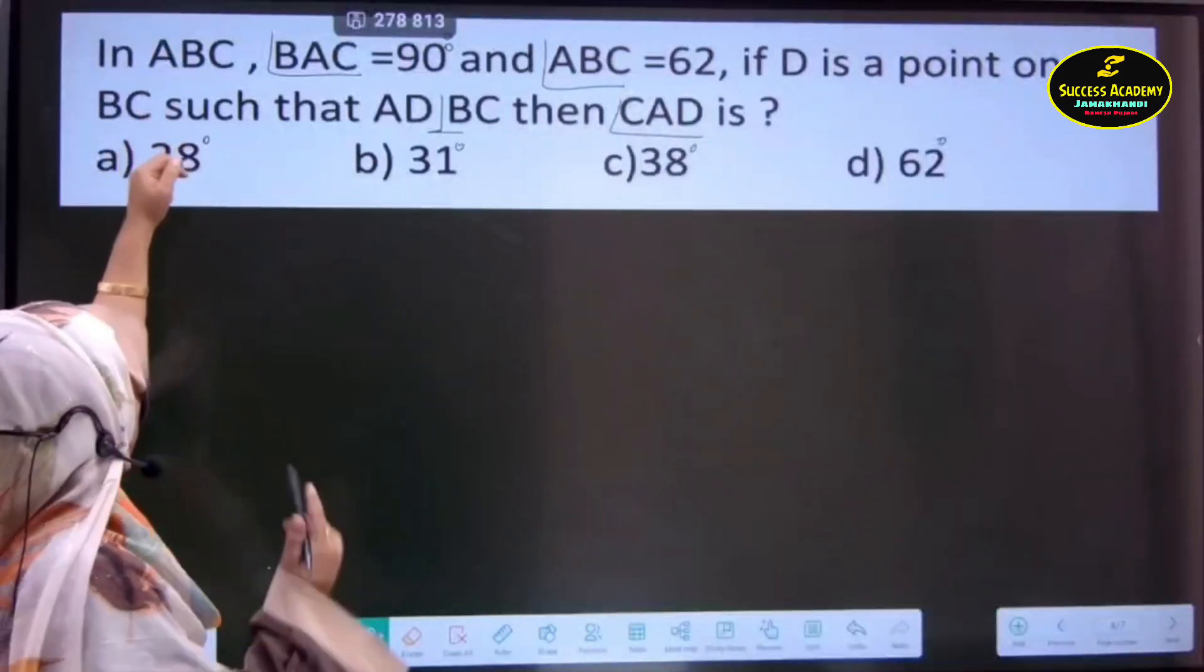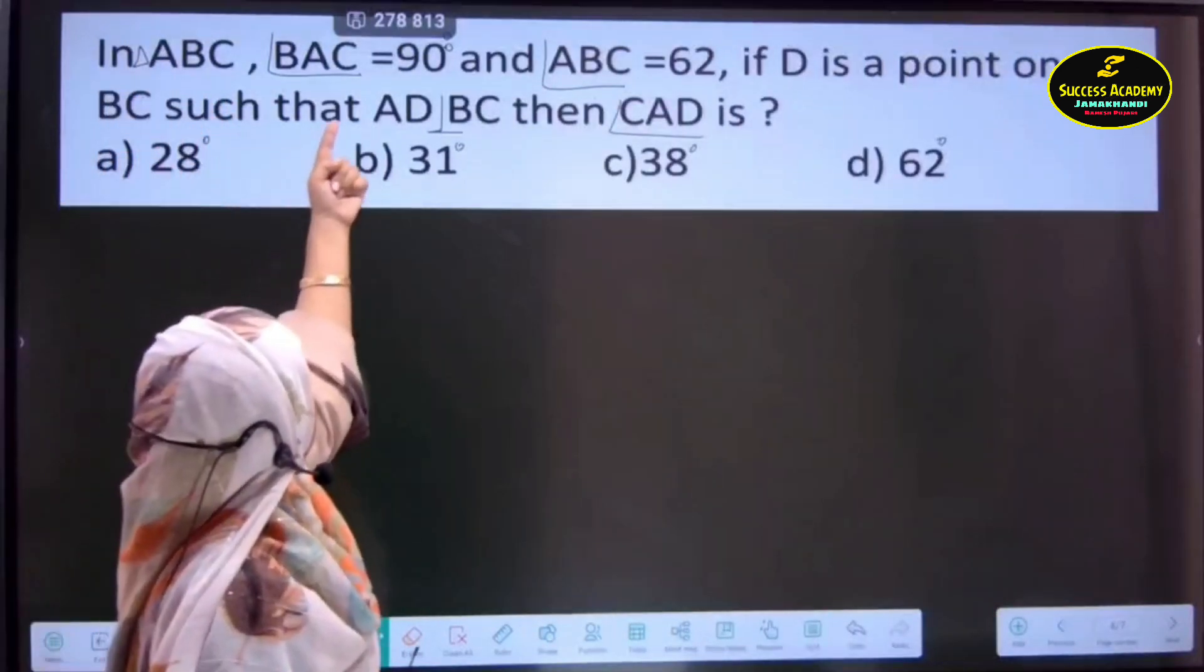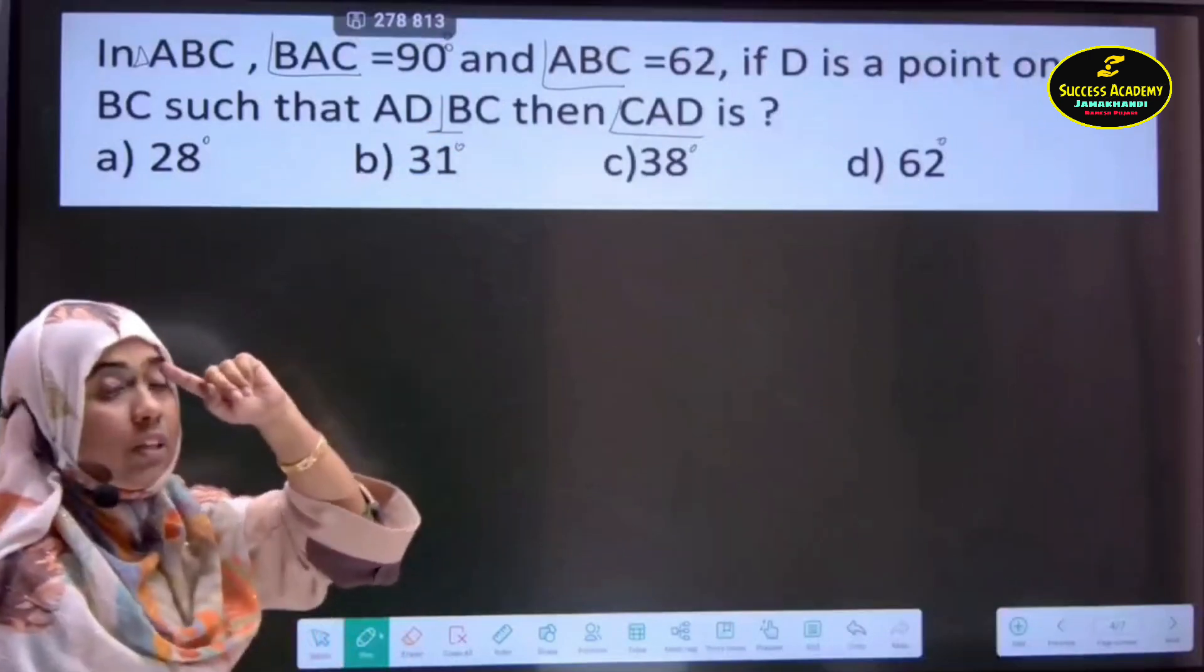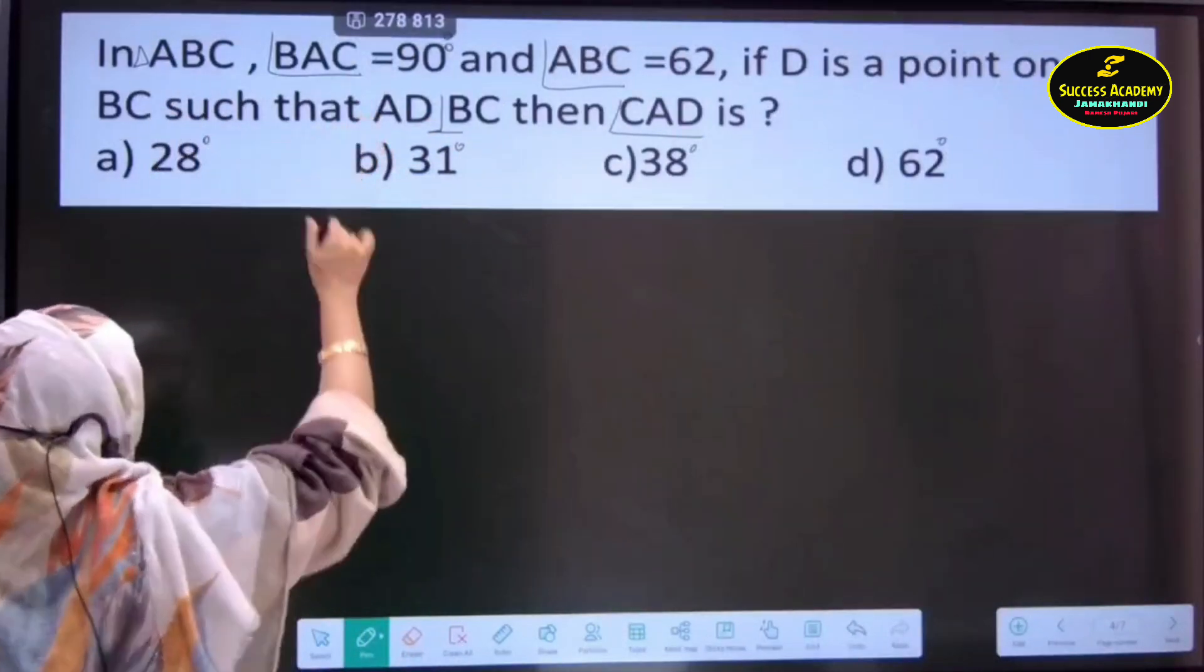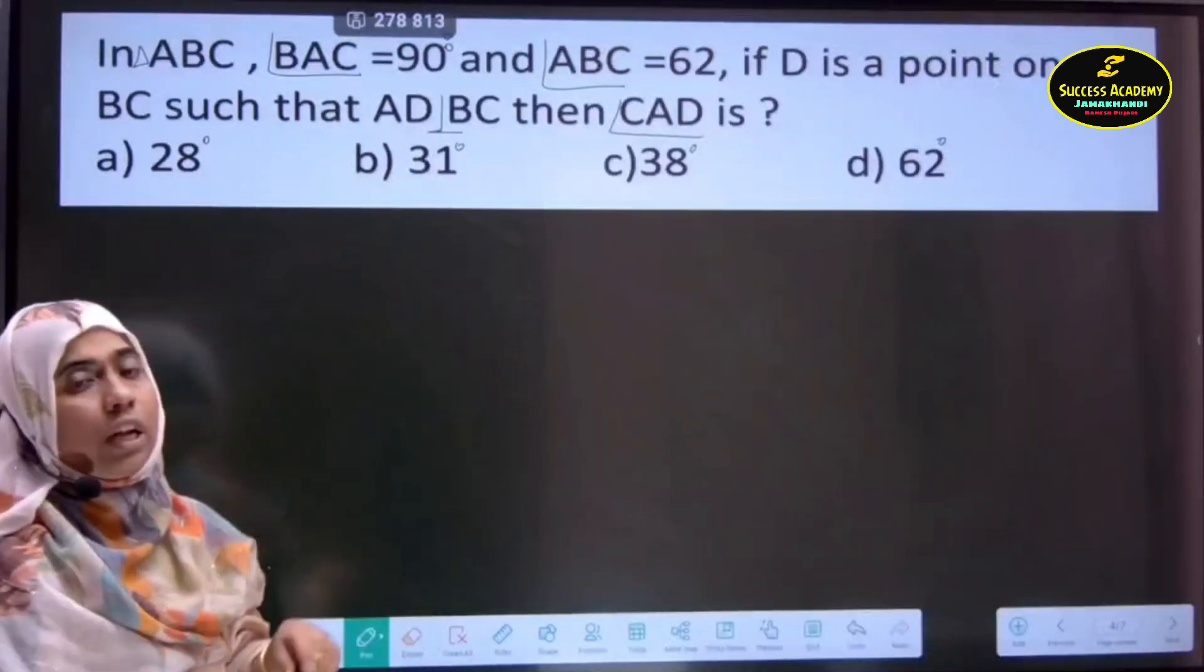In a triangle ABC, it should be a triangle. In a triangle ABC, angle BAC is given 90 degrees. It means isosceles. First of all, it is further. It is then right angle triangle because one of the angle is 90 degrees.